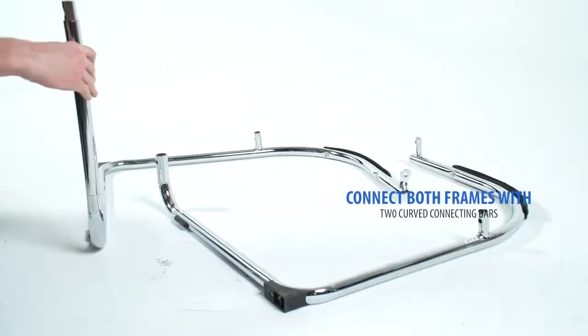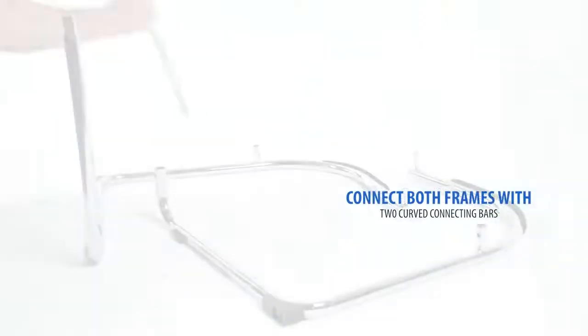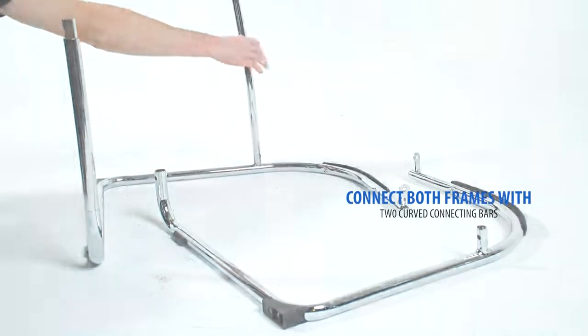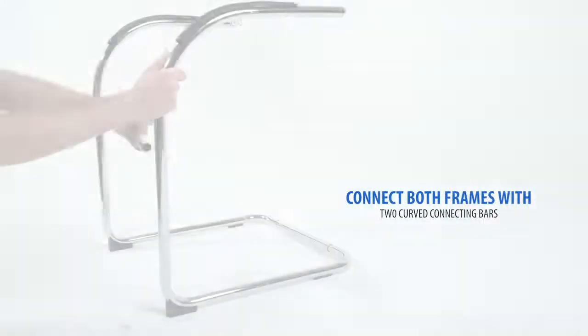Place the connecting bars onto one of the frames. Make sure the bend of the connecting bar goes towards the bottom of the chair. Slide the second frame onto the connecting bars.